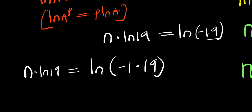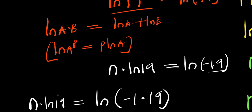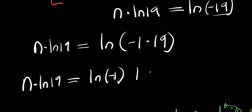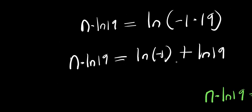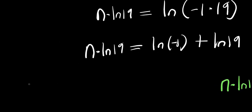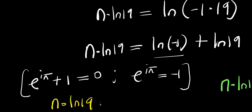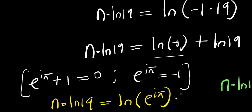Going back to the identity natural log of a times b equals natural log a plus natural log b. We also use Euler's identity: e to the power of i times pi plus 1 equals 0, meaning e to the power of i times pi equals negative 1. Substituting, n times natural log 19 equals natural log of e to the power i times pi, plus natural log 19.